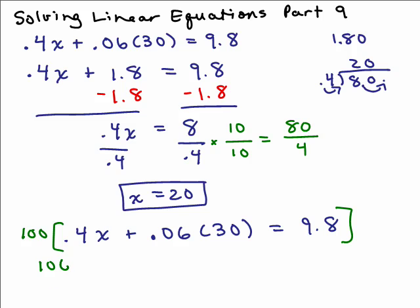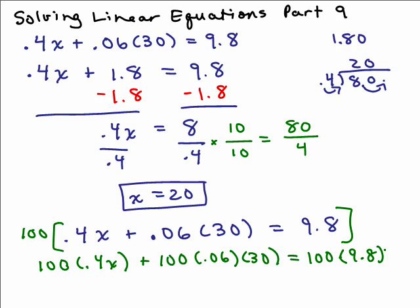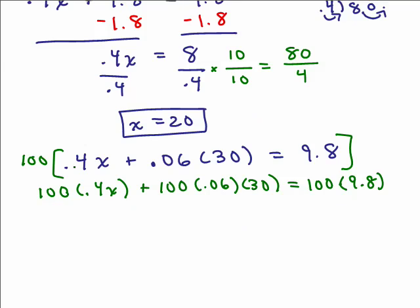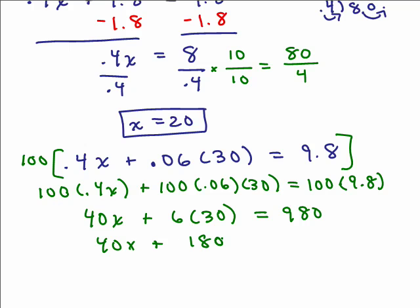All right? So we have 100 times the 0.4x, you don't always have to show this step, 100 times the 0.06 times the 30 still, right? And the 100 times the 9.8, all right? So you're distributing it, there's really only three terms, remember this isn't, you don't distribute the 100 to the 0.06 and the 30, so when I multiply 100 by 0.4x, that gives you 40x, because you have to move the decimal 2 to the right. 100 times 0.06 now just becomes 6, and I also have to multiply that by 30. Don't multiply both of these by 100. And 100 times 9.8 is 980. So this is a way of getting rid of the decimals in step 1, 40x plus 180 is 980.